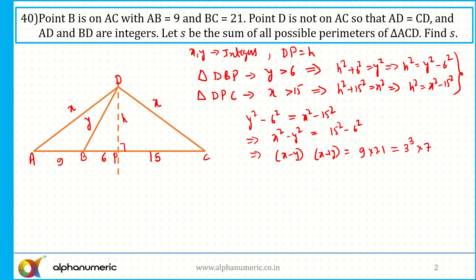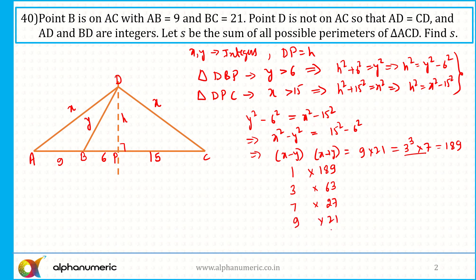The four ways to write 189 as a product of two factors where the first is smaller: 1 × 189, 3 × 63, 7 × 27, and 9 × 21. So the four cases for (X minus Y, X plus Y) are (1, 189), (3, 63), (7, 27), and (9, 21).